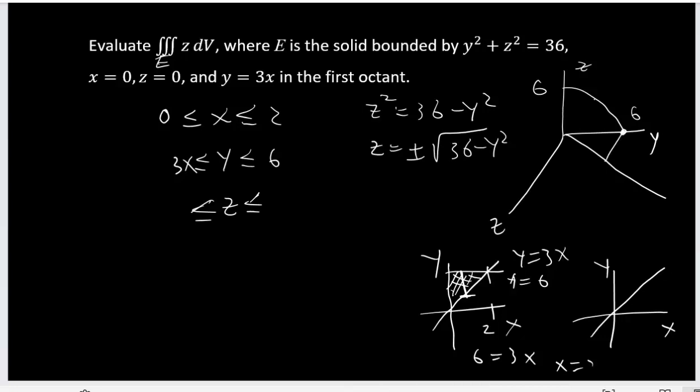So we can draw the picture now. So it will be just like this, we get a solid like this, this one in here, and also everything inside. So our z goes from 0 to the square root of 36 minus y squared.